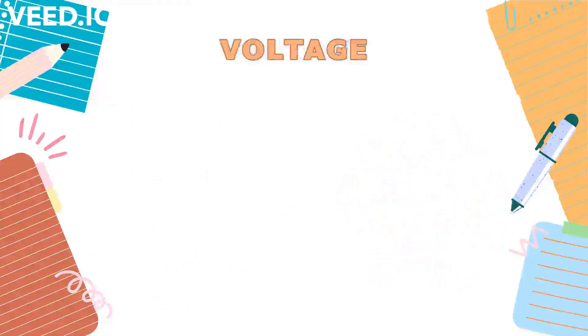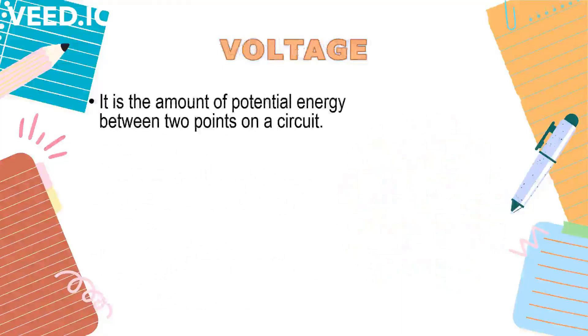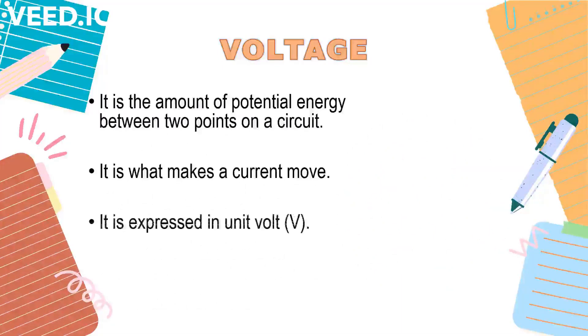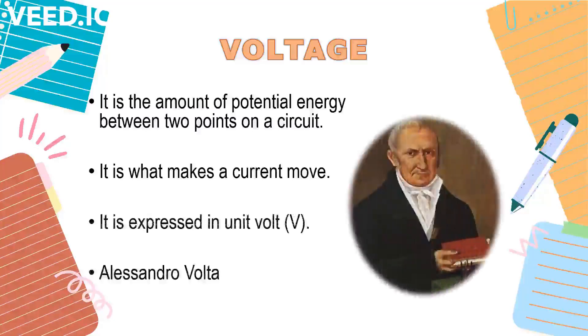Next is the voltage. It is the amount of potential energy between two points on a circuit. It is what makes a current move. It is expressed in unit volts. The unit volt is named after the Italian physicist Alessandro Volta, who invented the electric battery.